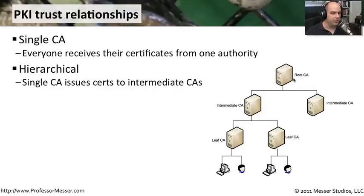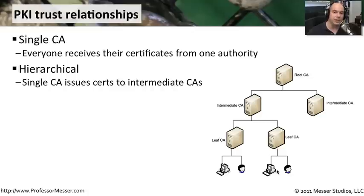The root certificate authority might be issuing certificates to the intermediate certificate authorities. And then even underneath those, you could have leaf certificate authorities, and finally your users and your resources. It depends on the size of your organization, and there may be geographical requirements or structural requirements within your organization that would require that level of control and the ability to spread the trust from the very top root all the way down to the other certificate authorities.